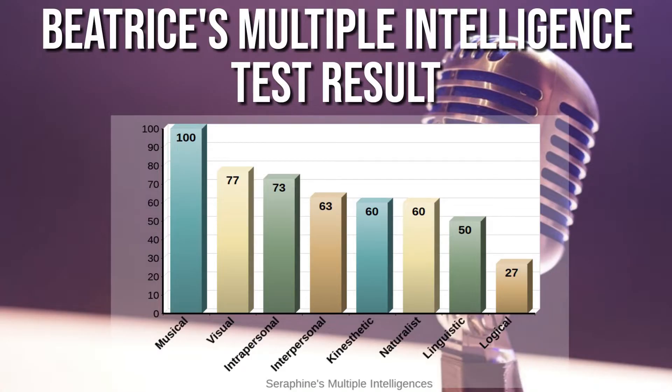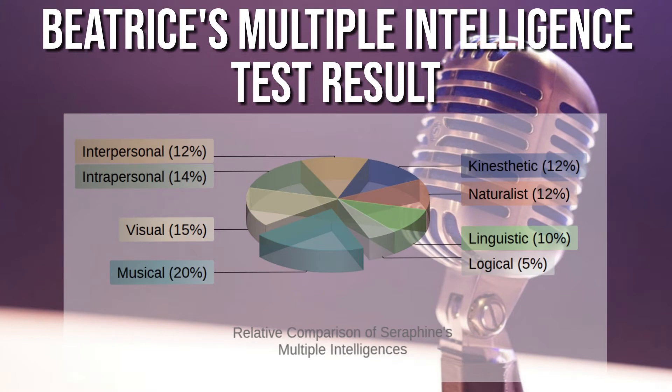This is the test result of my Multiple Intelligence Test. My most dominant intelligence is musical intelligence. I think it's true because I like to listen to music very often, and I know when someone is singing off-key and I know the beats and tunes to every music. My least dominant intelligence is logical-mathematical intelligence, because I'm not good at subjects based on logical thinking and mathematical problems.